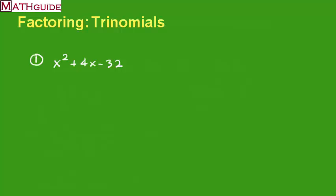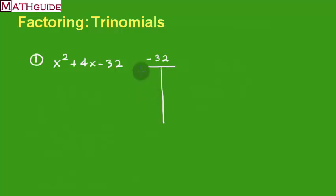Here's how many people do it. They take this number — the negative 32 — and they write down some factors of negative 32: two numbers that when you multiply them give negative 32. For instance, 2 times negative 16, or negative 2 times positive 16. When you multiply these you do get negative 32. But there's an added requirement: they also have to add up to 4. Here I'm getting negative 14, and here positive 14 — these do not work.